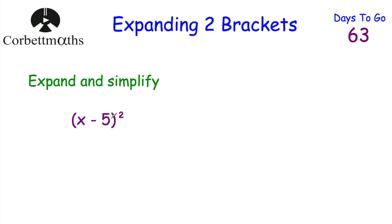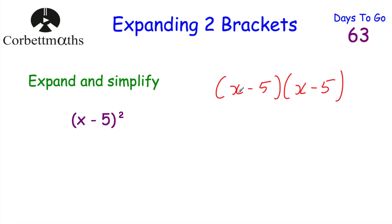Our next question says to expand and simplify (x − 5) squared. Remember, whenever you square something you multiply it by itself. So (x − 5) squared means (x − 5)(x − 5) — we're multiplying the bracket by itself.